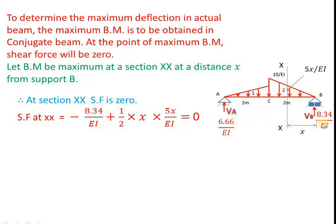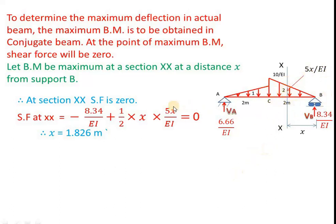Writing the shear force equation at this section, considering the portion from the right: it is minus 8.34 by EI plus the triangular load up to x, which is half base x times height 5x by EI. The height of the triangle at section x-x can be found from similar triangles: total height is 10 by EI over base 2, so height at x is 5x by EI. Solving the shear force equation equal to zero gives x = 1.826 m.